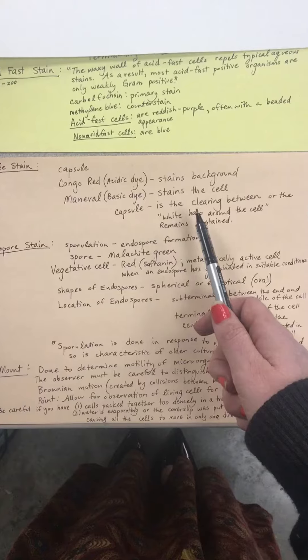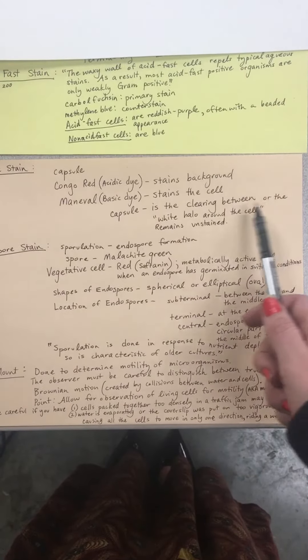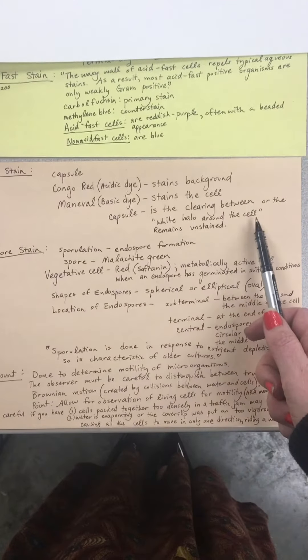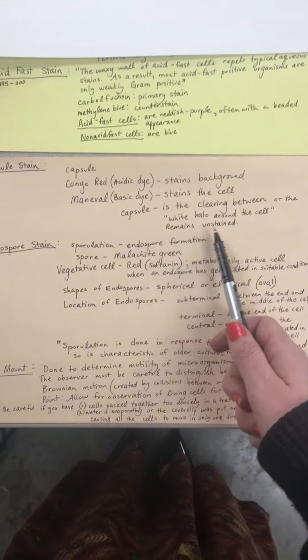The capsule is the clearing between or the white halo around the cell. Your capsule remains unstained.